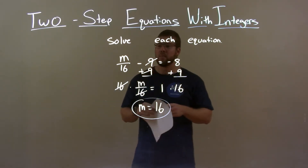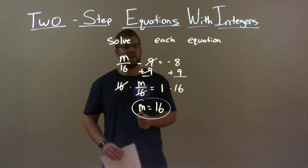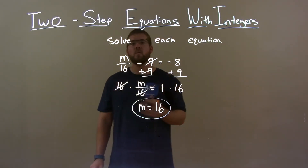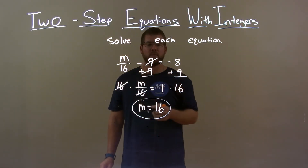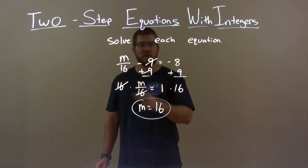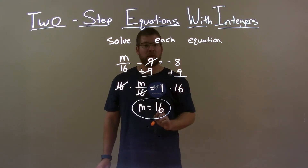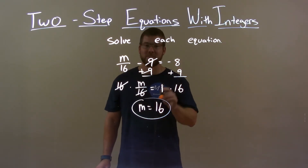Quick recap: we're given M over 16 minus 9 equals negative 8 and we want to solve for M. Add 9 to both sides and multiply both sides by 16. That gives me my final answer of M equals 16.